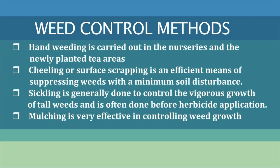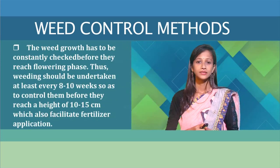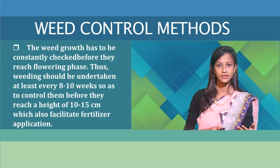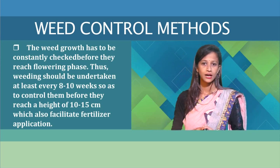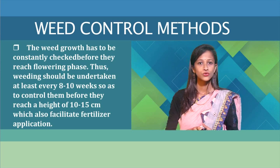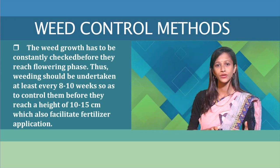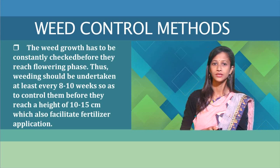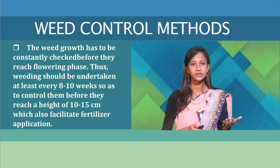Another important operation is mulching, which is very effective in controlling weed growth. The growth of weeds has to be constantly checked before they reach the flowering phase. Therefore, weeding should be done at least every 8 to 10 weeks so as to control them before they reach a height of 10 to 15 cm, which also facilitates fertilizer application. Border areas of tea fields, road sites, and steep terrain should be kept weed-free by slash weeding to avoid continuous dispersal of weed seeds to the adjoining tea fields.